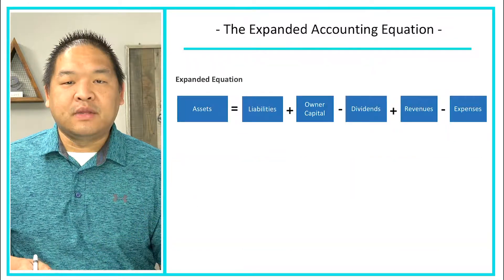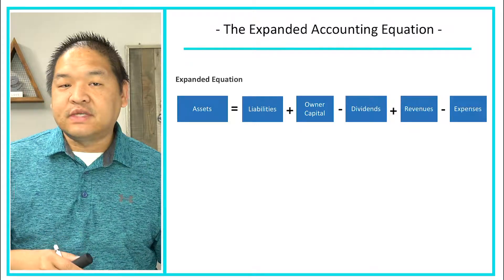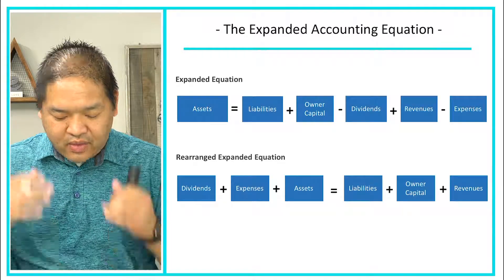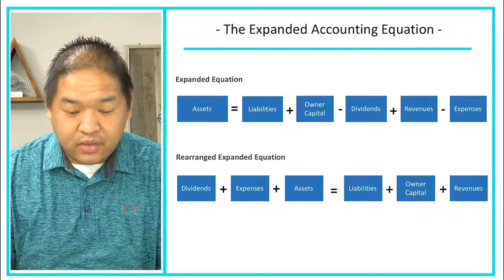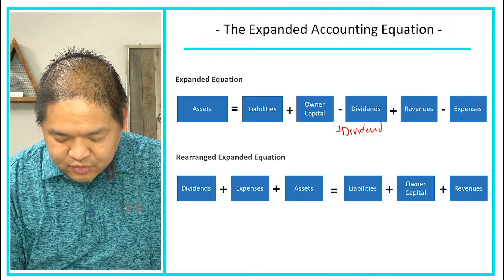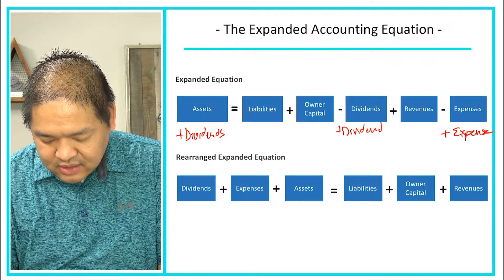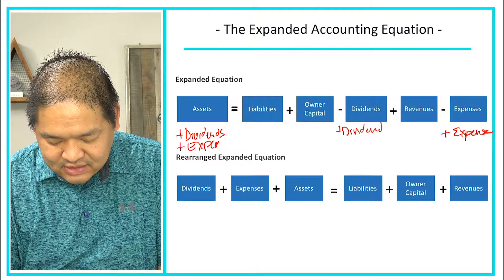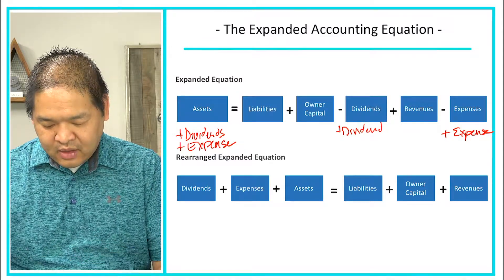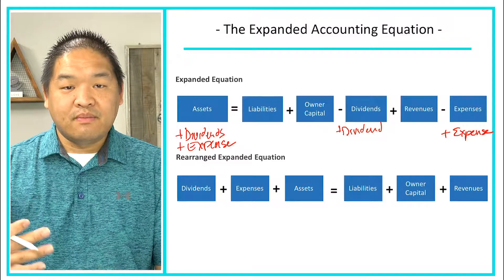We can move terms from the right side to the left side. We add dividends to the left side, which means we add dividends to both sides, and we add expenses to both sides. So we get: dividends plus expenses plus assets equals liabilities plus owner's capital plus revenue. No more minus signs, and that is the equation to know.